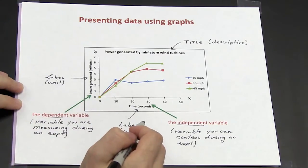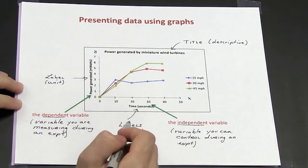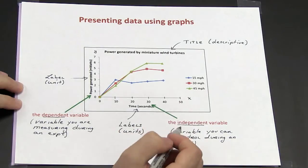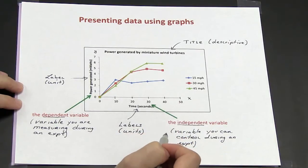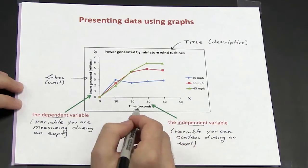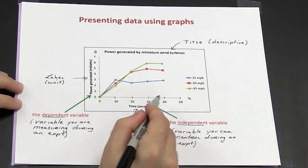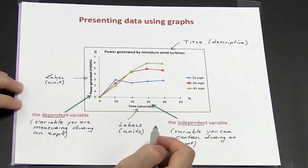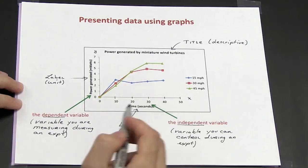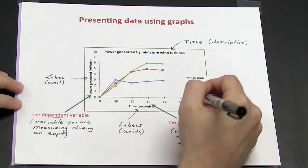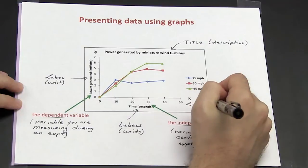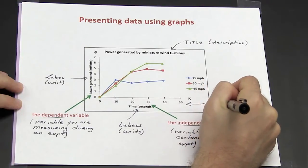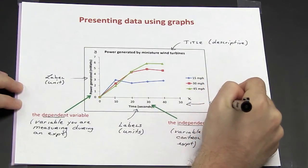The time periods in which I am taking those measurements is the variable I can control, making it the independent variable. Another thing you will notice about the graph is that both the x and the y-axis have a consistent scale.